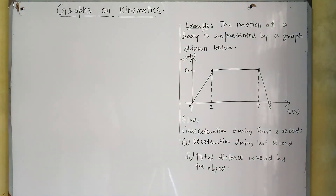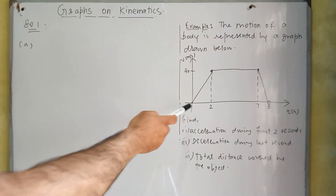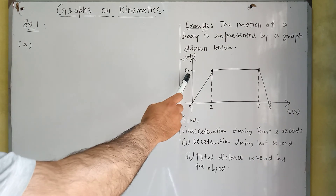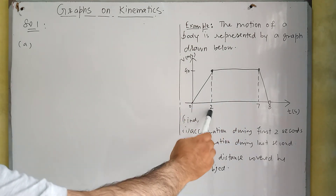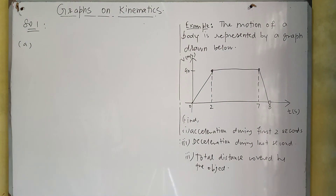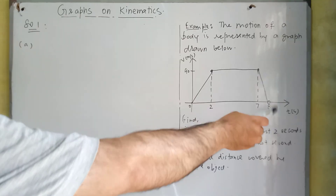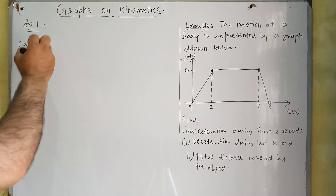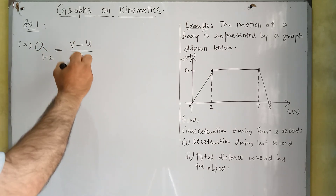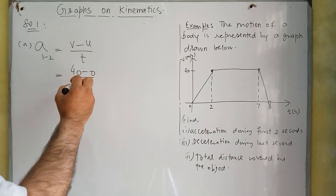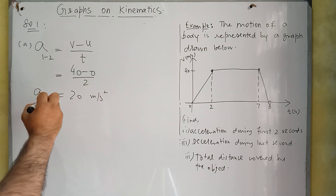We now have an example to solve. In the first part, we need to calculate acceleration during the first two seconds. A body starts from rest, and after two seconds it has attained a velocity of 40 meters per second. Using the formula: final velocity minus initial velocity divided by time, that is 40 minus 0 divided by 2, which gives 20 meters per second squared. This is the acceleration of the body during the first two seconds.